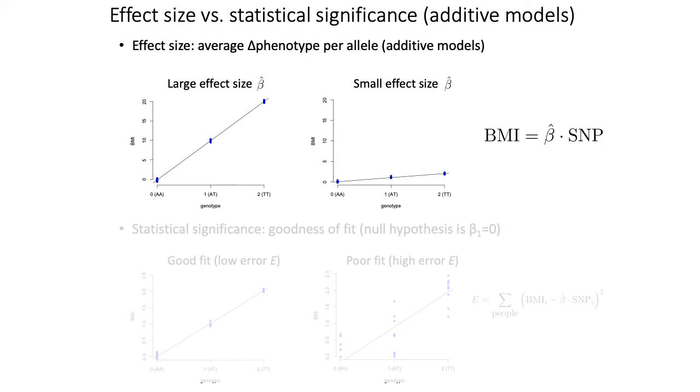Two important concepts that you need to know about for association testing are effect size and statistical significance. Effect size generally speaking refers to the average change in phenotype per reference allele that you estimate when you fit your line. Large effect size is shown on the left, where in this hypothetical case with BMI you see an average change of BMI of 10 units per reference allele, which would be huge if this was actually a real SNP. An example of a small effect size SNP would be one in which there's barely any change in BMI for every edition of a reference allele, which would be much more typical.